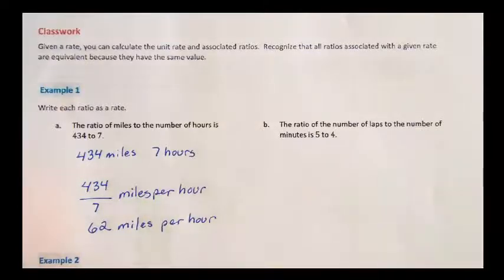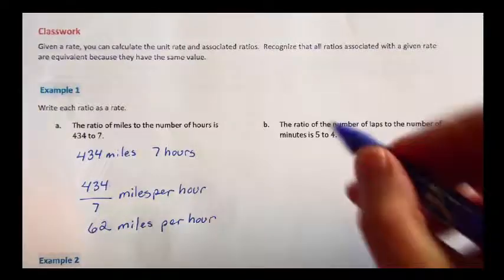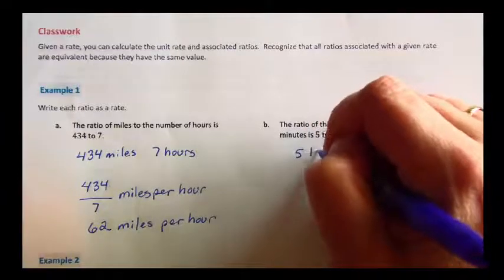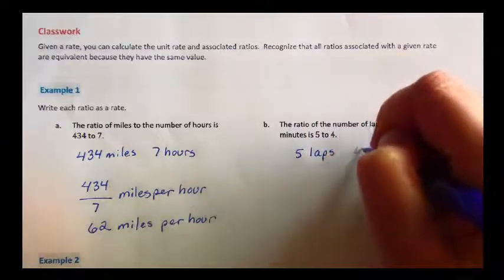Let's take a look at another problem. The ratio of the number of laps to the number of minutes is 5 to 4. 5 laps, 4 minutes.